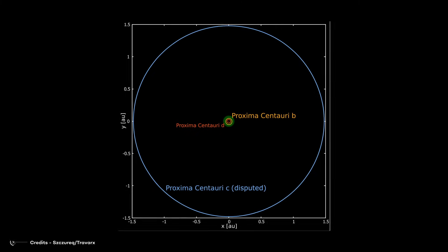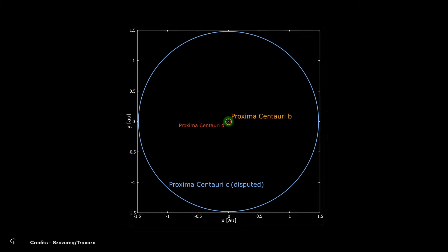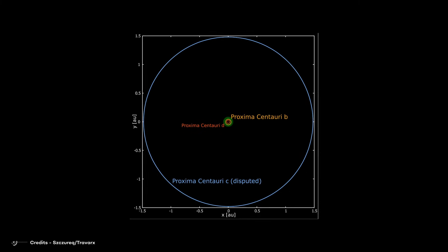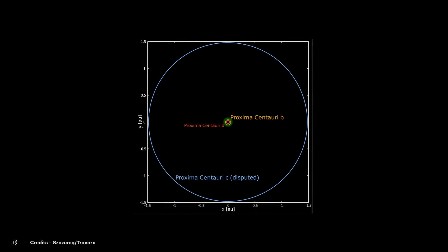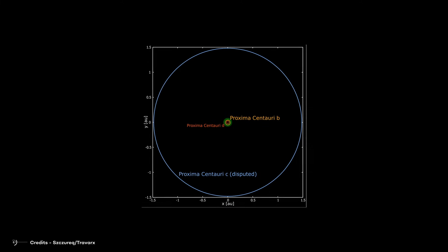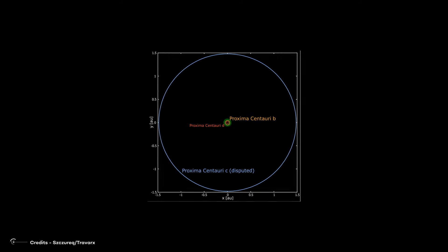Observations have also been made of what appear to be two planets known as Proxima c and d, about which there is not much information. Still, it is suspected that, like Proxima b, they could have habitable conditions.